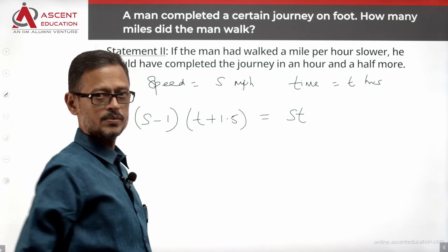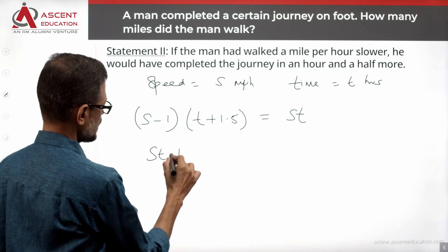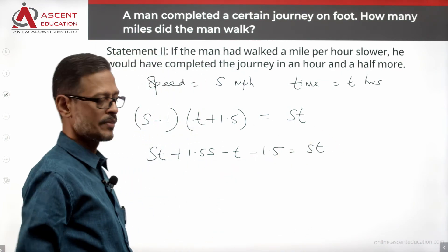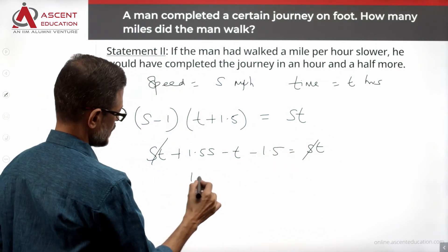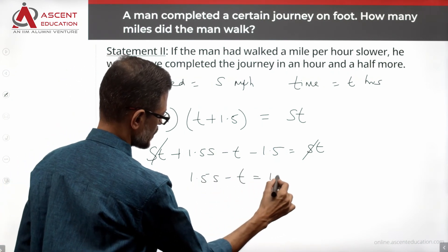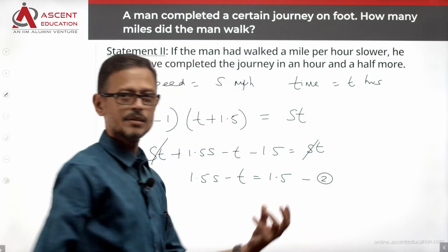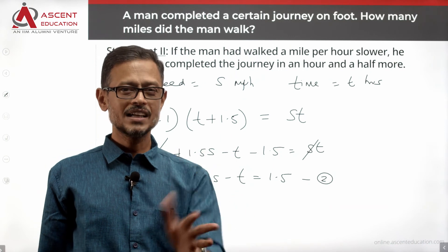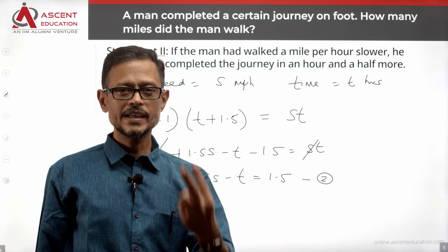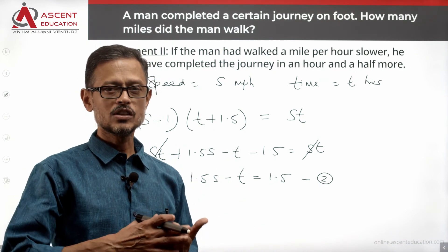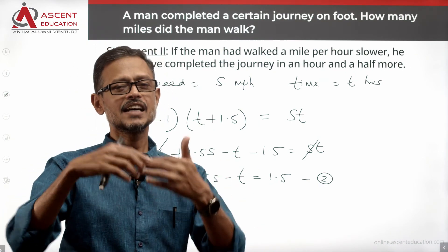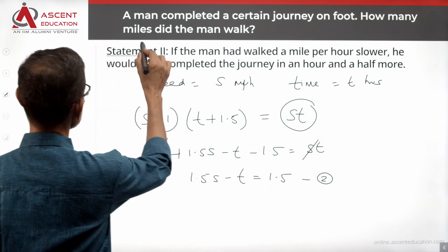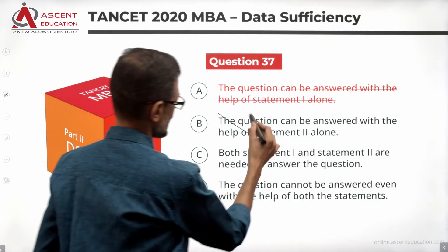We can equate the two distance expressions. Expanding (S−1)(T+1.5): ST plus 1.5S minus T minus 1.5 equals ST. ST cancels, leaving 1.5S minus T equals 1.5. This is equation 2. Again, we have two variables and one equation, so multiple values are possible. Statement 2 alone is also not sufficient — eliminate answer option B.